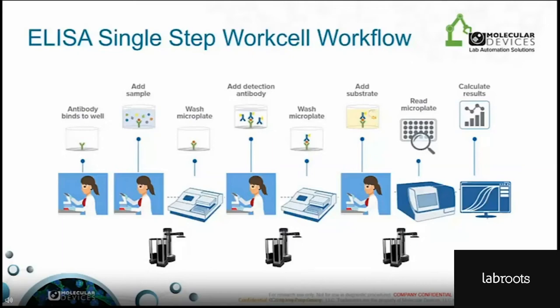The single-step system moves the plate from the hotel to the washer, then back to the hotel so the scientist or technician can perform antibody additions. After storing the labware back in the plate hotel, the S-Lab robot moves the plate to the microplate washer for its second wash. The scientist or technician must manually add the substrate before placing it back in the hotel so the robot can shuttle the plates to the microplate reader for data collection. This work cell does not offer much room for the addition of other instruments over time, primarily due to the reach of the robotic arm.